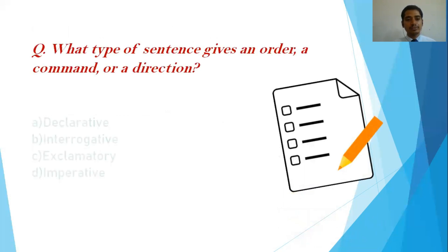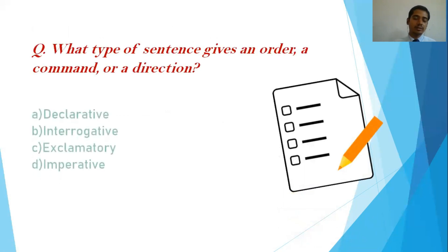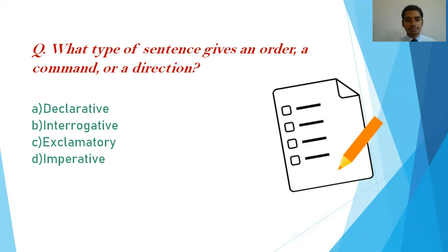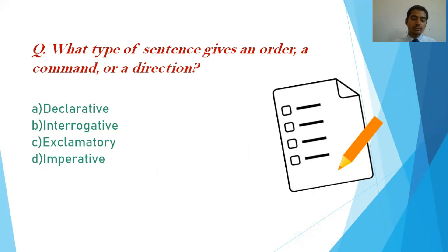Here is a sample question: 'What type of sentence gives an order, a command or a direction?' The options given are: declarative, interrogative, exclamatory, or imperative. The right option is D — imperative. This is how the questions will be put forward.